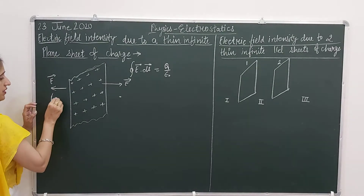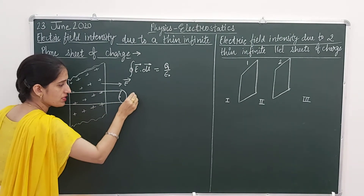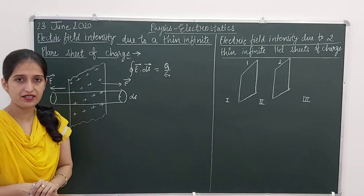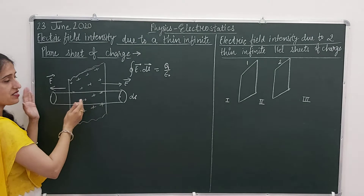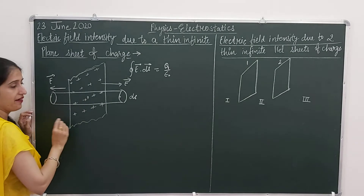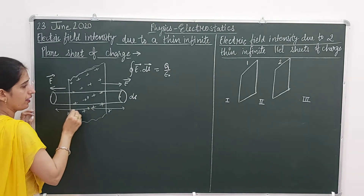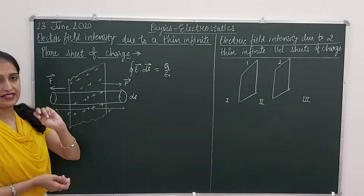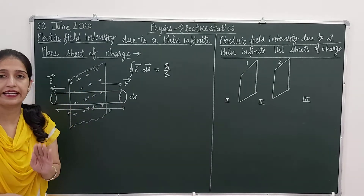The Gaussian surface I am going to imagine will be a small cylinder of cross-sectional area dS. I am choosing a Gaussian surface as a cylinder which has its ends exactly at equal distances from the center of the sheet. If this is the center of the sheet as well as of the cylinder, suppose this distance is R and this side is also R. Our observation point can be on either side. That is why I have chosen a Gaussian surface cylindrical in shape.